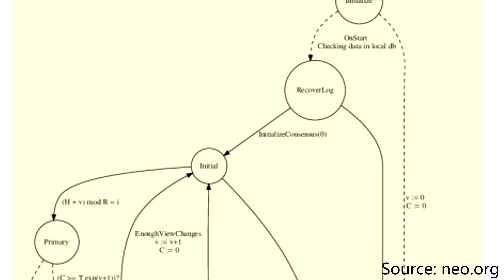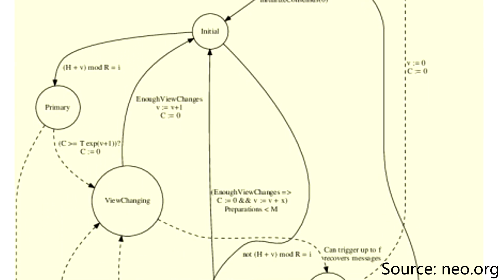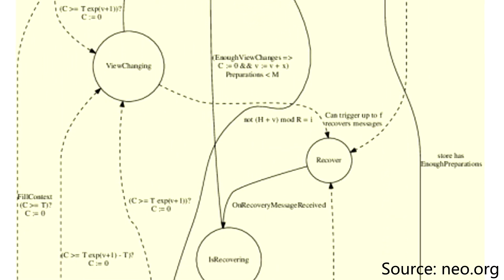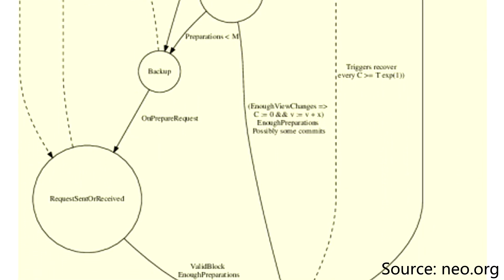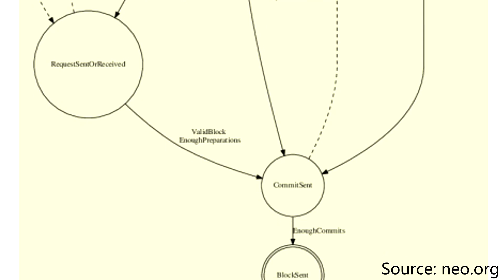Before NEO there was AntShares, which first started in 2014. AntShares was a smart contract platform that ran off of the Byzantine Fault Tolerance system. This was something different from Ethereum but was made to have an efficient smart contract blockchain system. AntShares in 2017 was later rebranded to NEO, which is as we know it today, or some may refer to it as NEO 2.